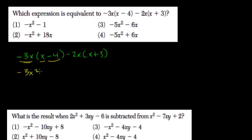Negative 4 times negative 3x is plus 12x, and then we have minus 2x times x, that's negative 2x squared. Minus 2x times 3 is negative 6x.